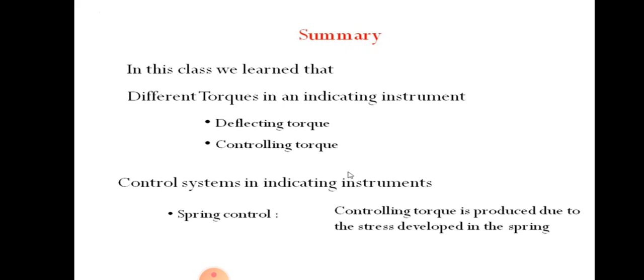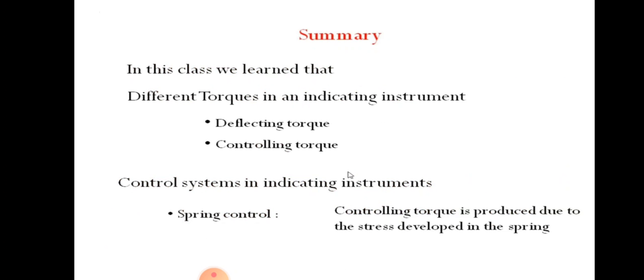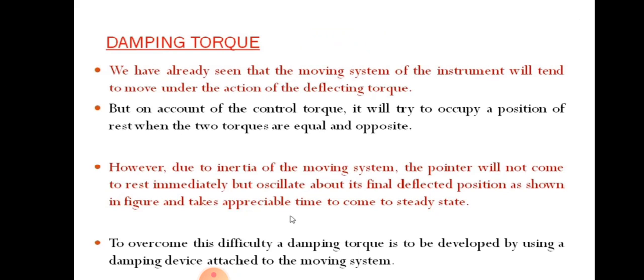We also studied spring control and gravity control in the previous lecture. These two types of controls are used in the controlling torque system. Spring control produces stress using a spring, and in gravity control we use weights W1 and W2 which act to form the gravity control on the indicator. Today we will start with the damping torque.